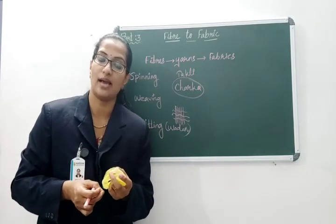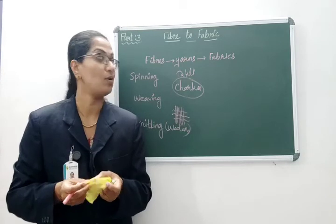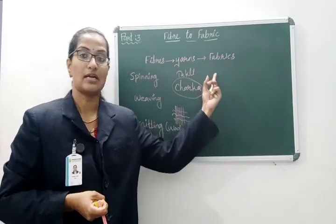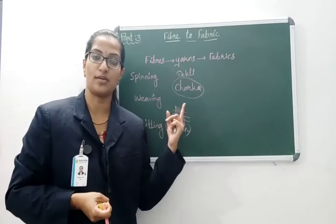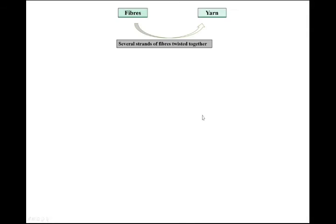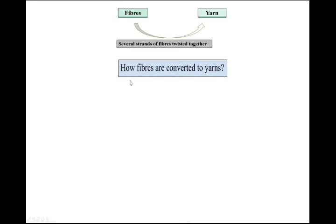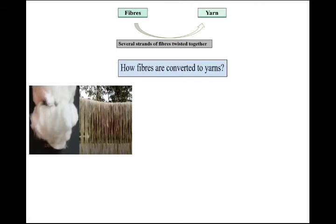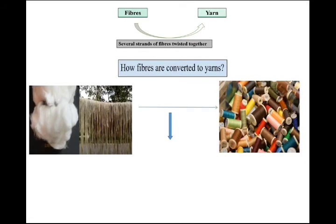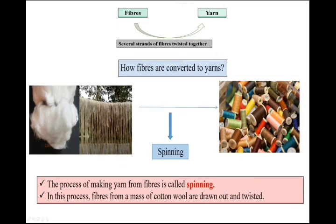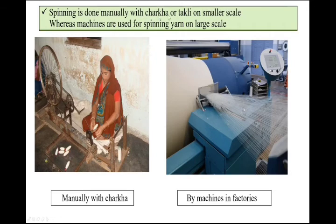Let us go into the animation where you will identify the different machines and how fibers are converted to fabrics. We have already learned that several strands of fibers are twisted together to form yarns. The fibers obtained from plants and animals are converted into yarn by spinning. The process of making yarn from fibers is called spinning — in this process, fibers from a mass of cotton are drawn out and twisted. Spinning is done manually with a charkha or tackli on a smaller scale, or with spinning machines for larger scale.